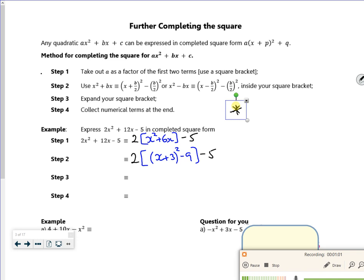So that's step one, step two. So expand your bracket, so it now becomes 2 lots of x plus 3 all squared minus 18 minus 5. And then tidy up, 2 lots of x plus 3 squared minus 23.